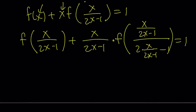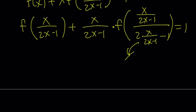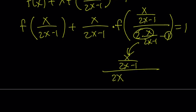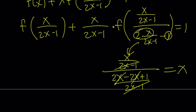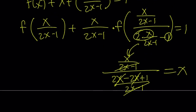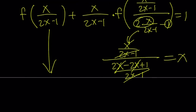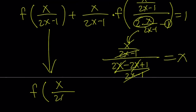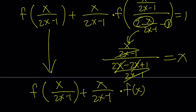Let's go ahead and simplify this, and then I'm going to use this along with the original equation. To simplify inside the parentheses, I can write it as x over 2x minus 1 divided by: if you multiply these you get 2x, and making a common denominator you subtract 2x minus 1, giving 2x minus 2x plus 1, divided by 2x minus 1. These have the same denominator; flipping and multiplying, the 2x cancels and we end up with x — which is really cool. So we get f of x over 2x minus 1 plus x over 2x minus 1 multiplied by f of x equals 1.